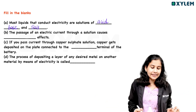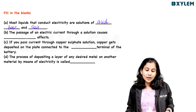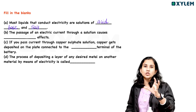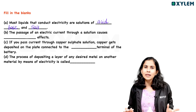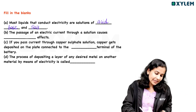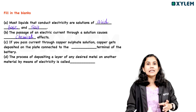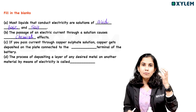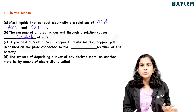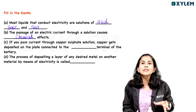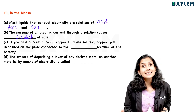So if we pass electricity through a solution, the passage of an electric current through a solution causes what? When electricity passes through a solution, it is called the chemical effect. We learned chemical effects — electric current causes chemical effects such as gas bubbles and metal deposition. The passage of electric current through a solution causes chemical effects.